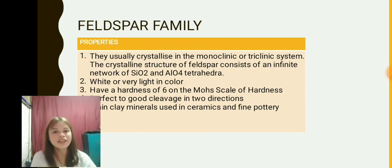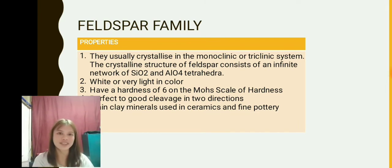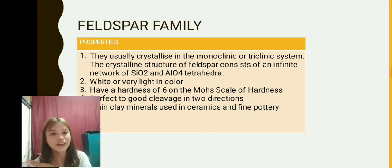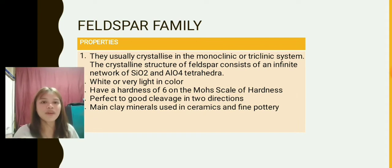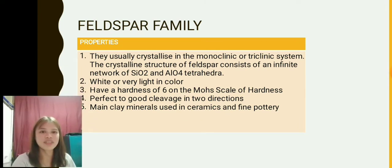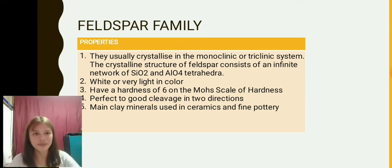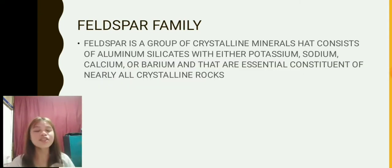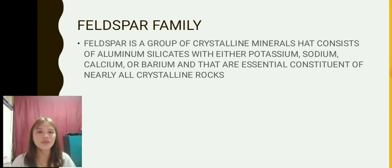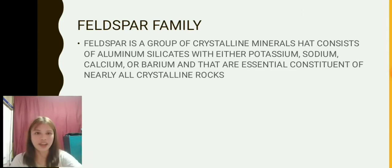Feldspar family properties: they usually crystallize in the monoclinic and/or triclinic system. They are white or very light in color, have a hardness of 6 on the Mohs scale, and perfect to good cleavage in two directions. They are main clay minerals used in ceramics and fine pottery. The feldspar family is a group of crystalline minerals consisting of aluminum silicates with either potassium, sodium, calcium, or barium, and are essential constituents of nearly all crystalline rocks.